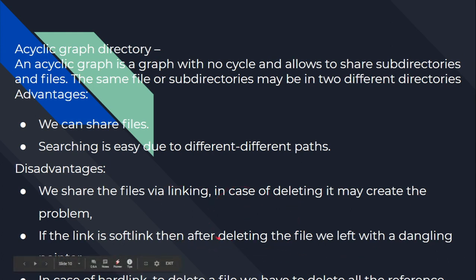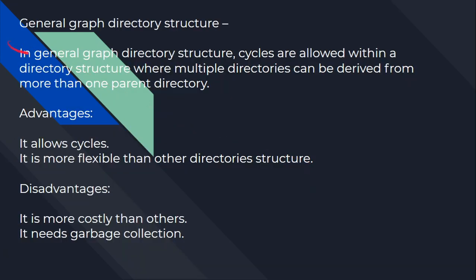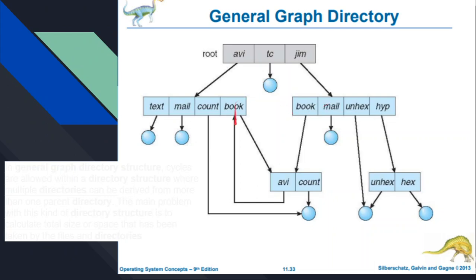These are the disadvantages of sharing via links. The next one is the general graph directory. You can see the root with subdirectories. Here, 'book' is common to AVI and JAM subdirectories. But here there is no sharing — the AVI book belongs to one directory and the AVI of another directory is separate. Since it is a graph, cycles are allowed. You can see a closed path, which is called a cycle.